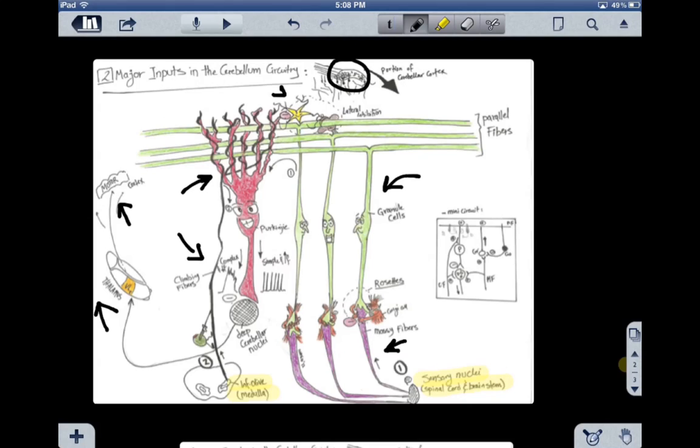I'm going to walk you through the first input, which is the sensory nuclei from the spinal cord and brainstem. Mossy fibers from sensory nuclei synapse on the granule cell at this region. Their axons become parallel fibers that innervate Purkinje cells.